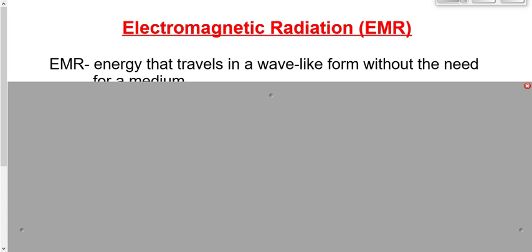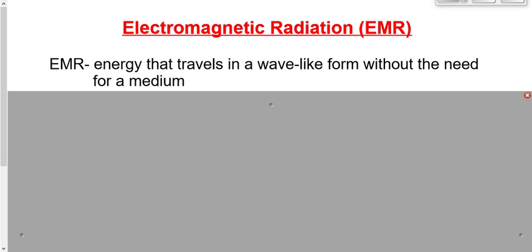Today we're going to talk about electromagnetic radiation. I want to define it first. Electromagnetic radiation is energy that travels in a wave-like form without the need for a medium. What do I mean by that — a medium?